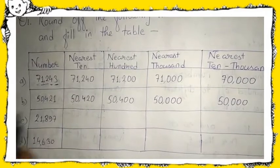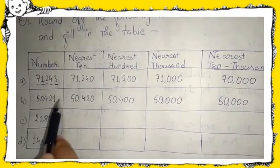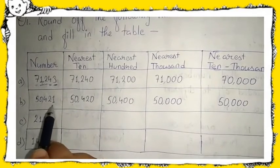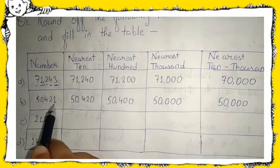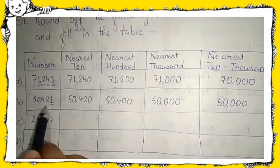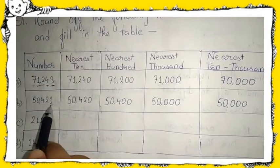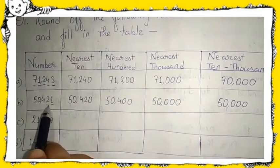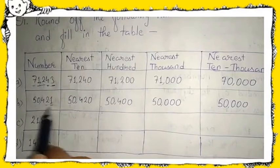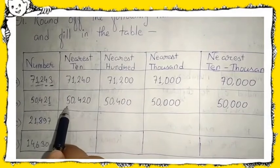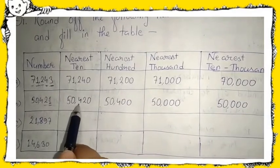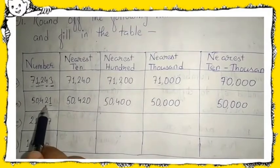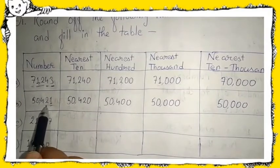Now see your next number: fifty thousand four hundred twenty-one. Here also, first change to the nearest ten. For that, look at the ones place — there is a one there, which is less than five, so your answer will be fifty thousand four hundred twenty. Similarly, for the nearest hundred, check the tens place.